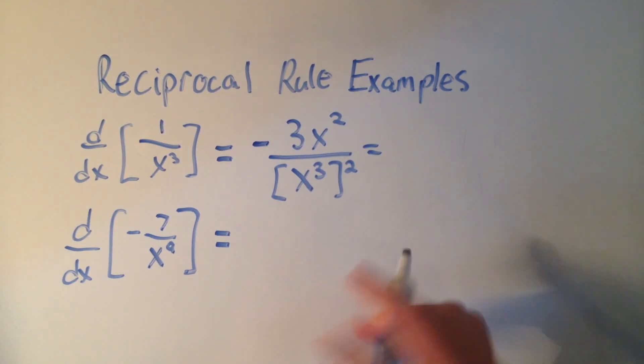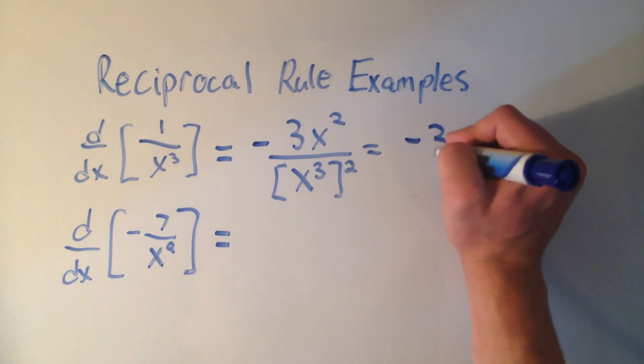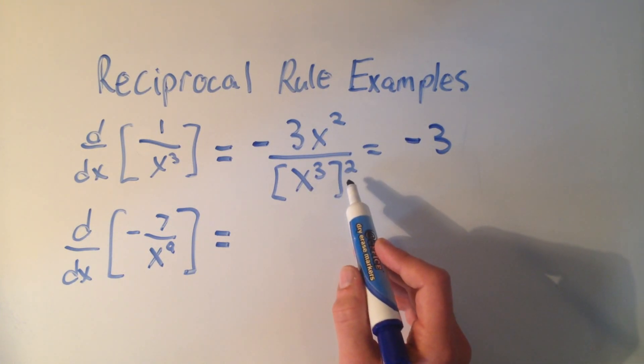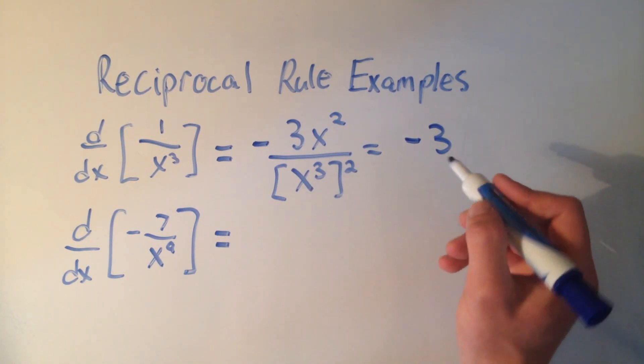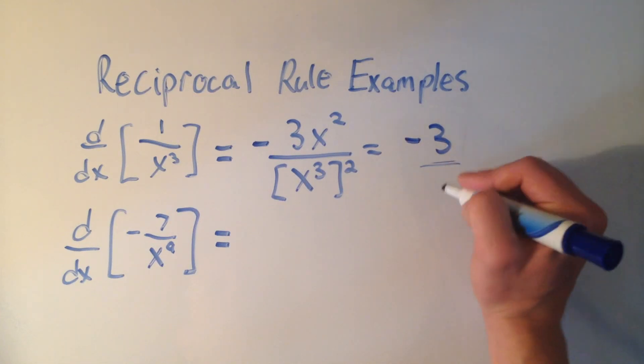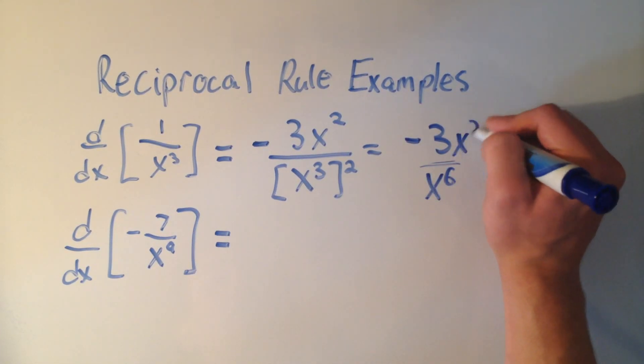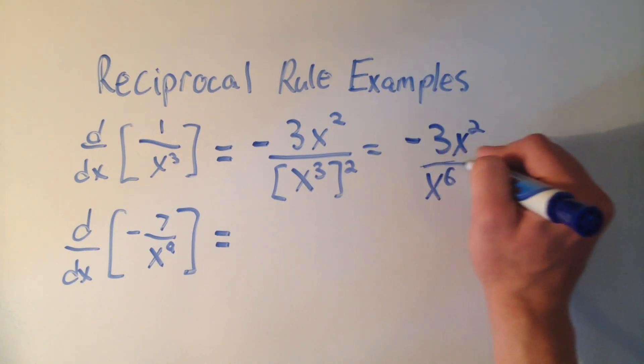But I can simplify this pretty nicely, I'll leave that minus 3 there. x cubed squared, that's x to the 6th, using properties of exponents. If I have an exponent raised to an exponent, I multiply those numbers.